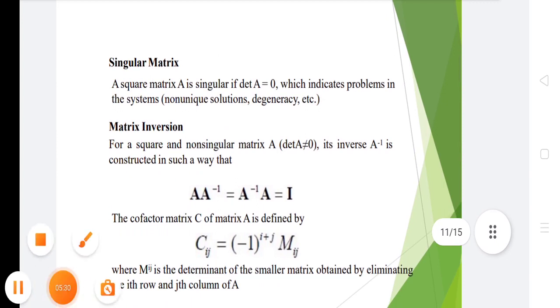In singular matrix, a square matrix A is singular if determinant of A equals zero, which indicates problems in the system. In matrix inversion, for square and non-singular matrix A, its inverse A inverse is constructed such that A into A inverse equals A inverse into A equals I, the identity unit matrix.